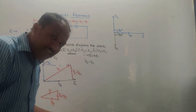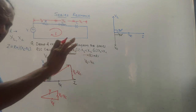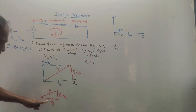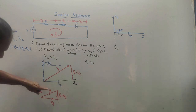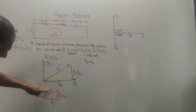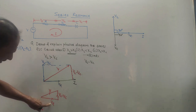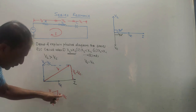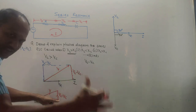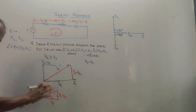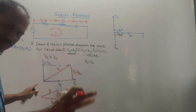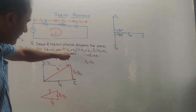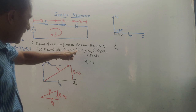If an impedance triangle is asked, make the thing simple — in place of V you write impedance Z, and in place of VR you write R. The diagram remains the same; only the names are different. This is the first condition, XL greater than XC.